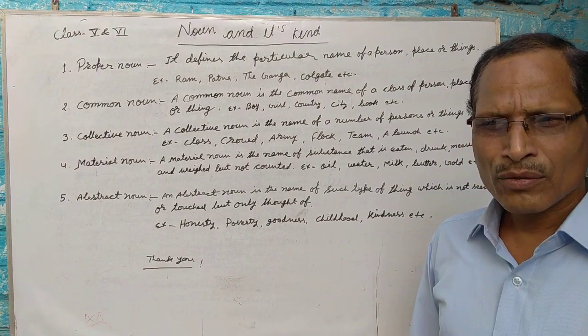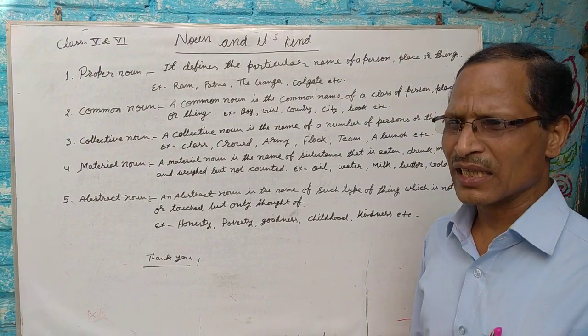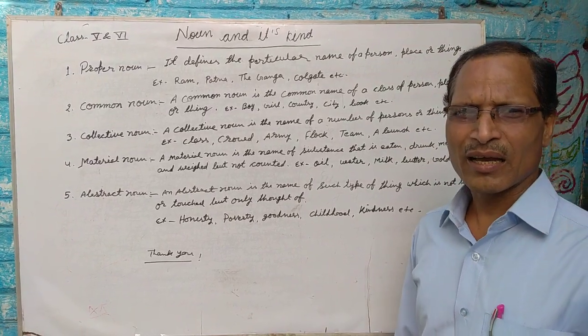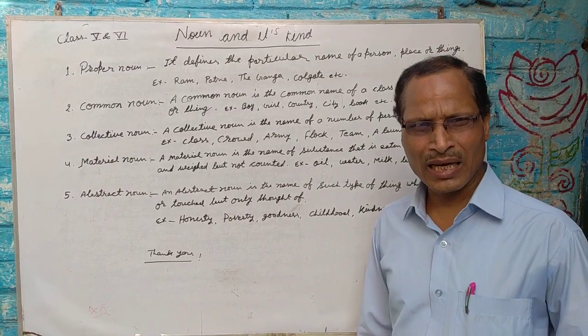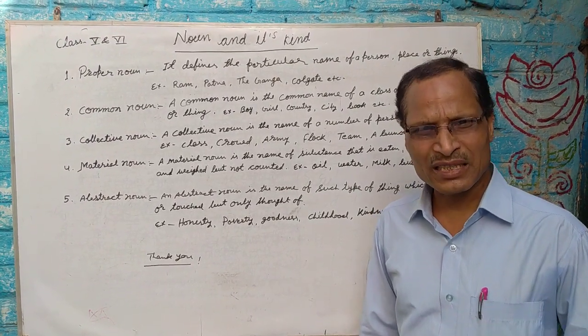Examples of abstract nouns include goodness — which refers to the quality of being good — and poverty, which refers to the state of being poor. These are things we can only think of or feel, not see or touch.